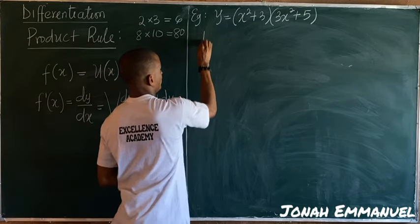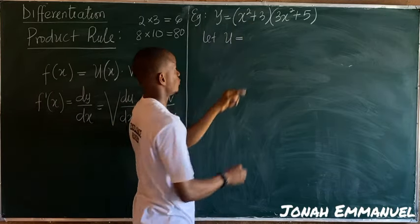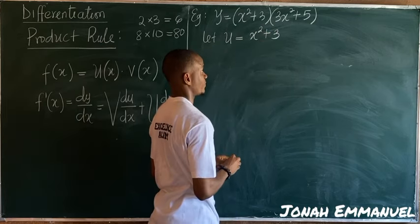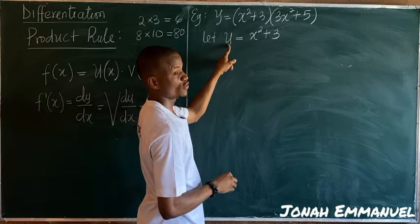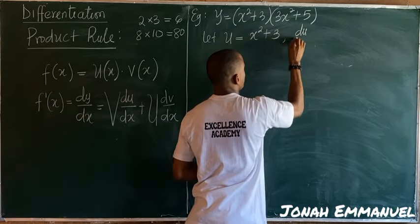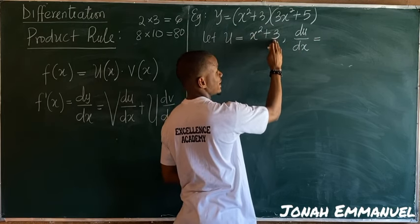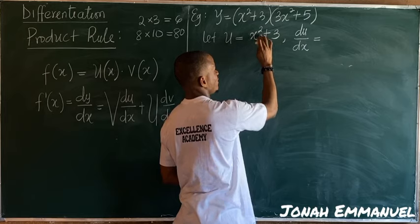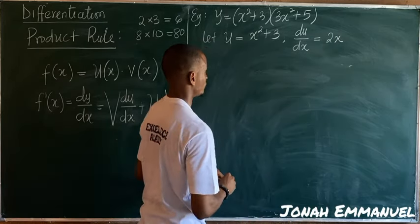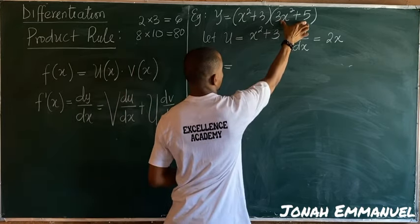So let u be equal to the term on the left, which is x² + 3. Next, differentiate u with respect to x, so du/dx equals 2x — the constant is zero, so it drops off.